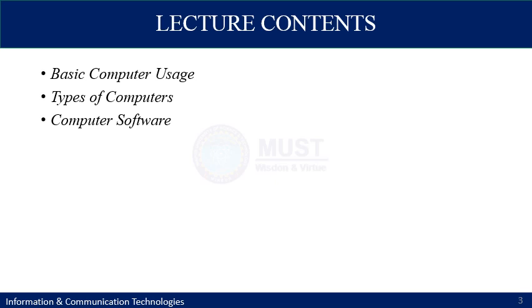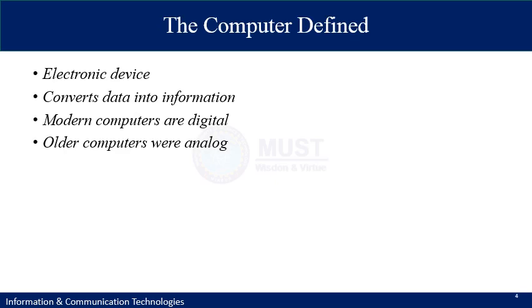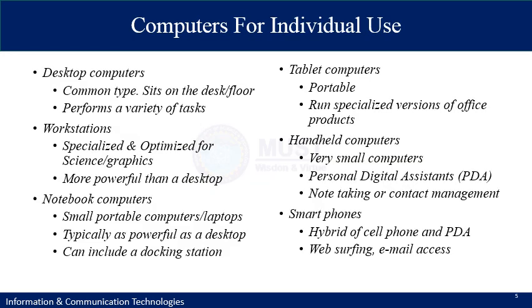If you define the computer system generally, a computer system is an electronic device which computes some operations to give you your desired result. Usually it converts the data into some form of useful information — that means you provide the raw data and you get the meaningful information. In modern terms, computers are digital; however, if you look at the history of computers, there were computers in older times that were analog, so we will discuss both kinds.